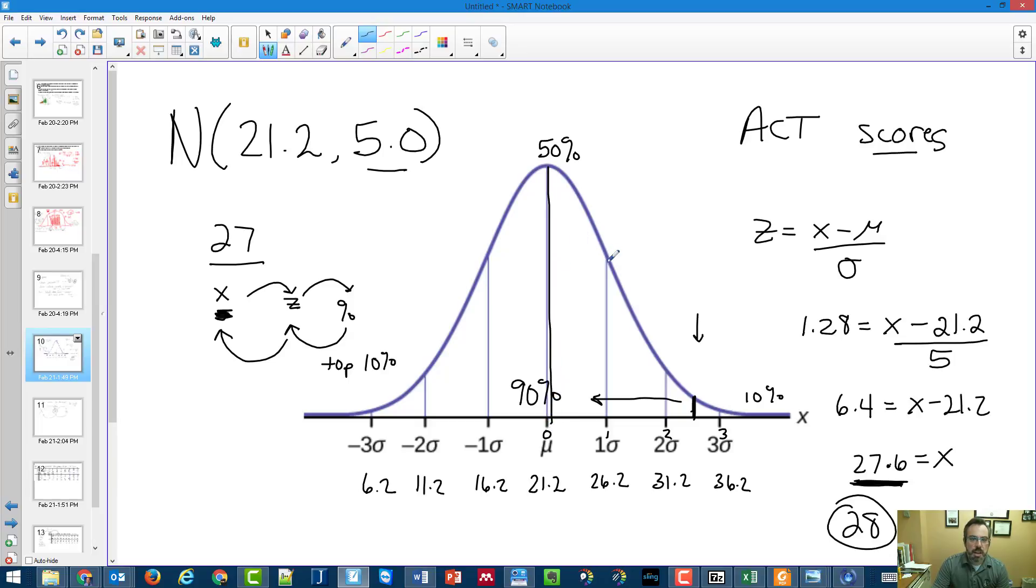If I get a z-score that ends up being one, it means I'm one standard deviation. If I get a z-score that ends up being two, that means I'm two standard deviations. Therefore, a z-score of 1.3 means I am 1.3 standard deviations away from the center. So be careful when you're looking at it.